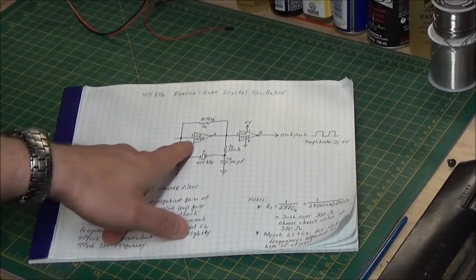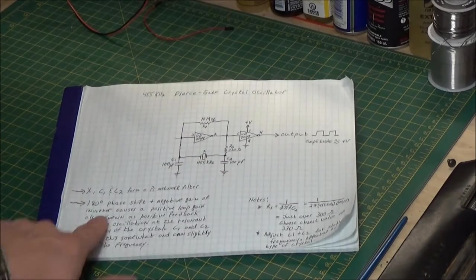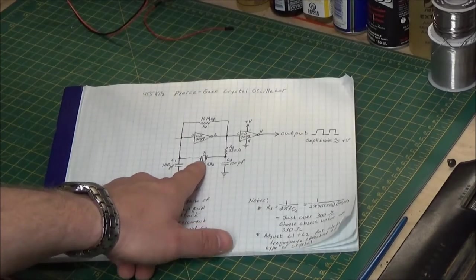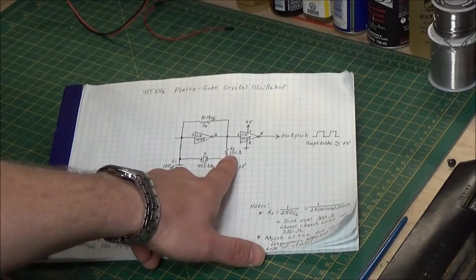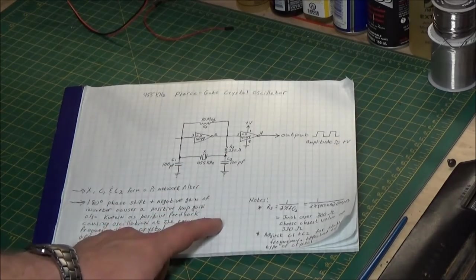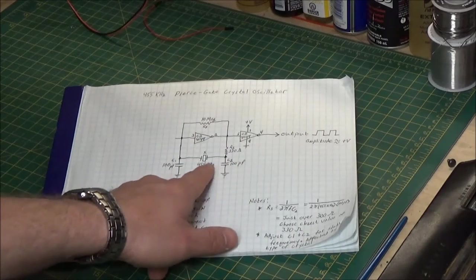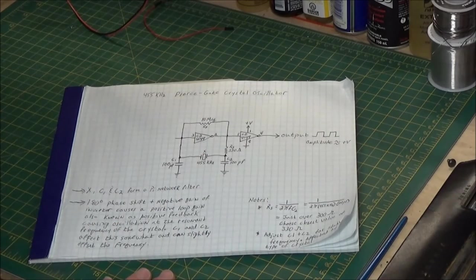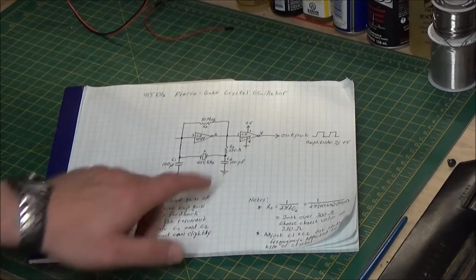Basically all we're doing is taking one of these chips and creating a Pi network filter with the two capacitors and the crystal oscillator. Then we have to have a little isolation resistor that gives isolation and protection between the output of the inverter and the oscillations of this crystal. If you don't have that at certain frequencies, you can get some strange harmonics.